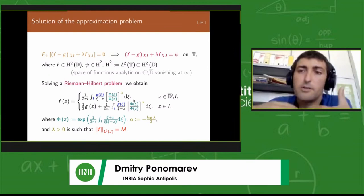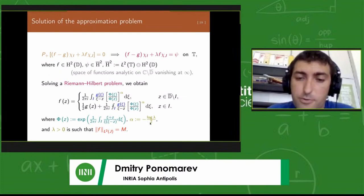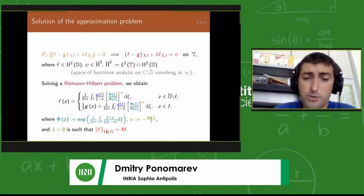The solution is characterized by its normal equation. It must satisfy the normal equation. P plus here is a projection from L2 on the boundary, on the circle, to Hardy space H2. Lambda, which appears here, is the Lagrange parameter, which is introduced as a degree of freedom to meet this constraint. Getting rid of the P plus operator, we have to introduce a function psi which would be in the orthogonal complement of Hardy space.